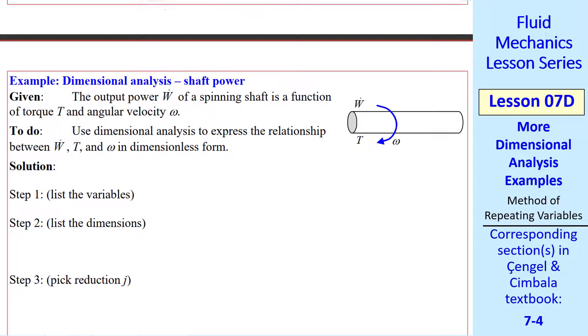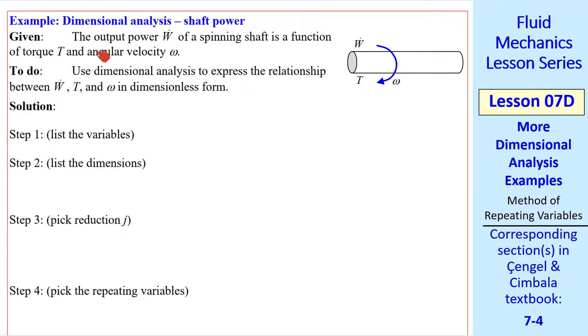Let's do another example. Namely, let's look at shaft power. Suppose all we know is that the output power w dot of a spinning shaft is a function of torque t and angular velocity omega. Let's use dimensional analysis to express some relationship between these variables in dimensionless form. We go through the same steps. I'll go through it a little more quickly this time. We list the variables and see that n equals 3. We list the dimensions. We showed in a previous lesson that w dot has dimensions of ml squared over t cubed.